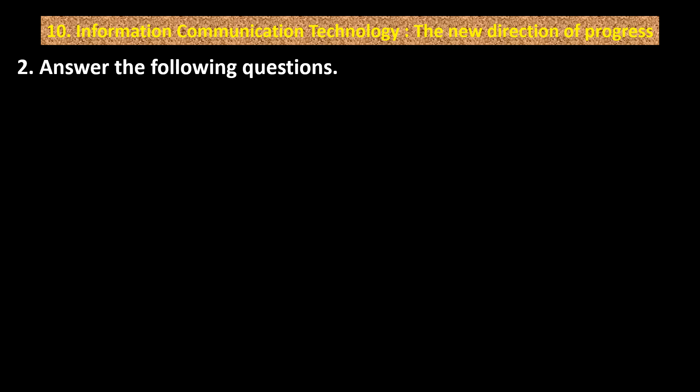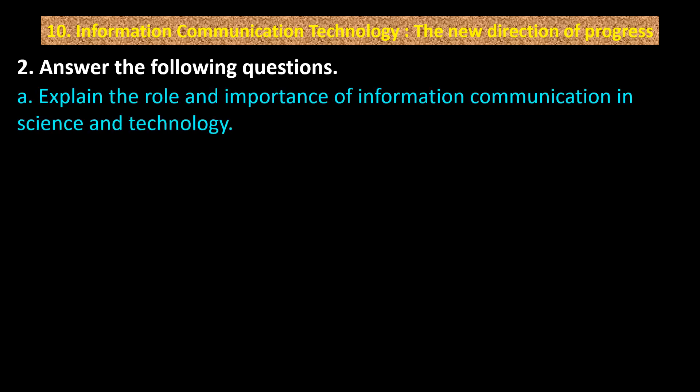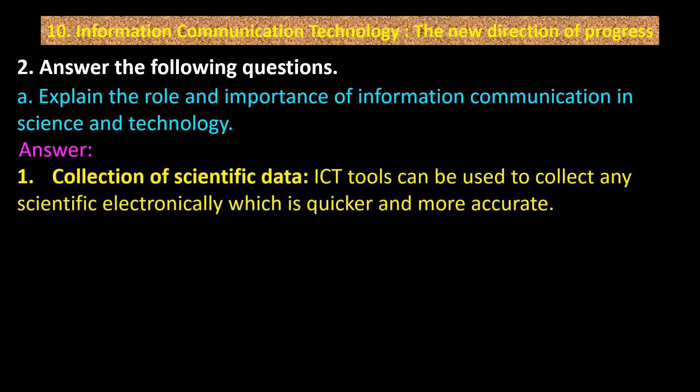Question 2: Answer the following questions. Part A: Explain the role and importance of information communication in science and technology. Answer, Point 1: Collection of scientific data — ICT tools can be used to collect any scientific data electronically, which is quicker and more accurate.